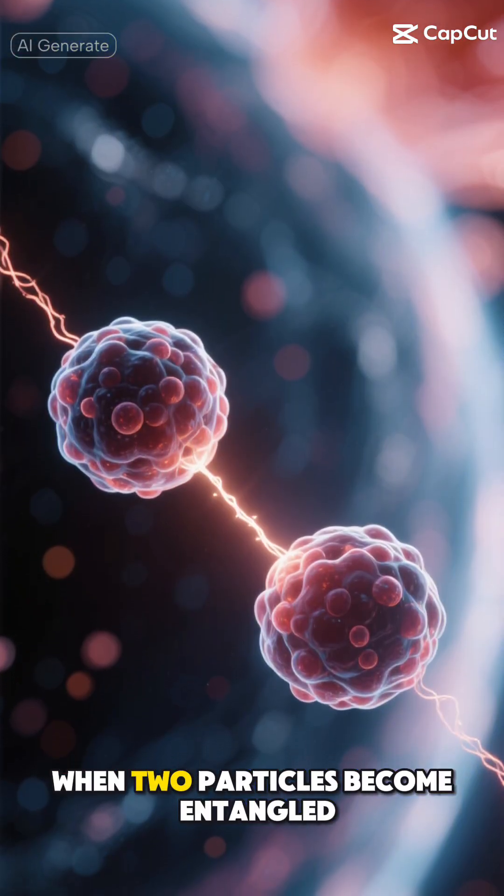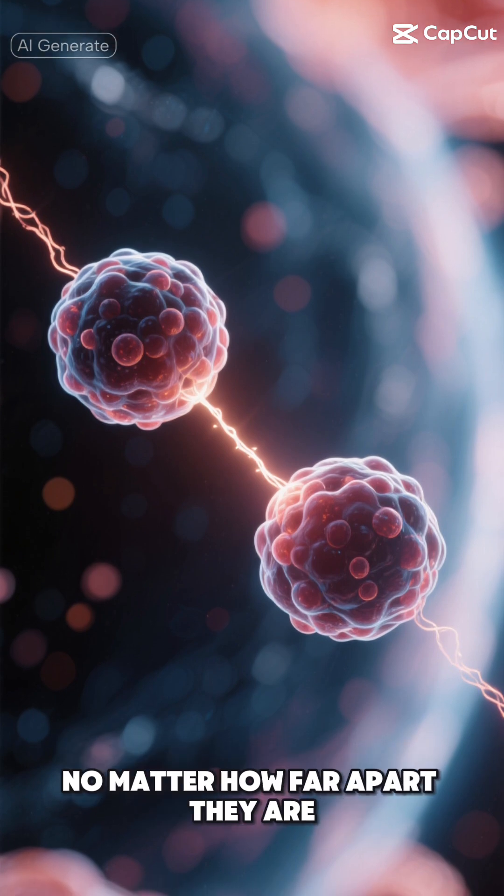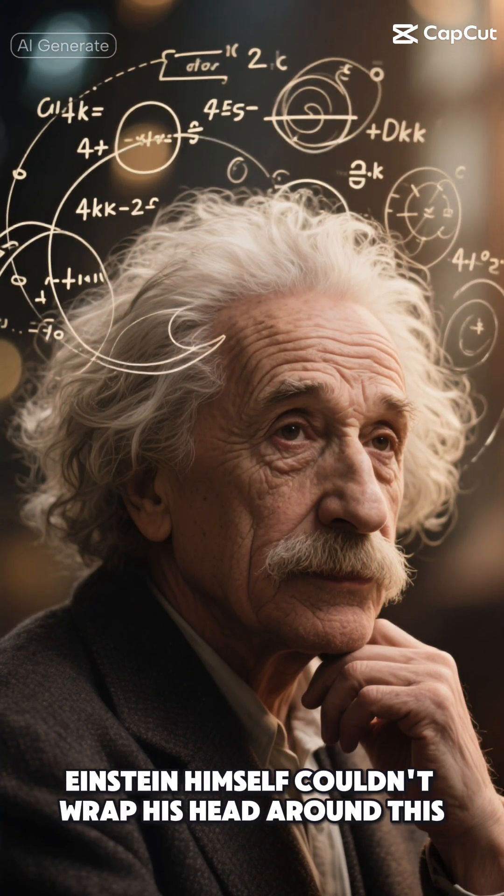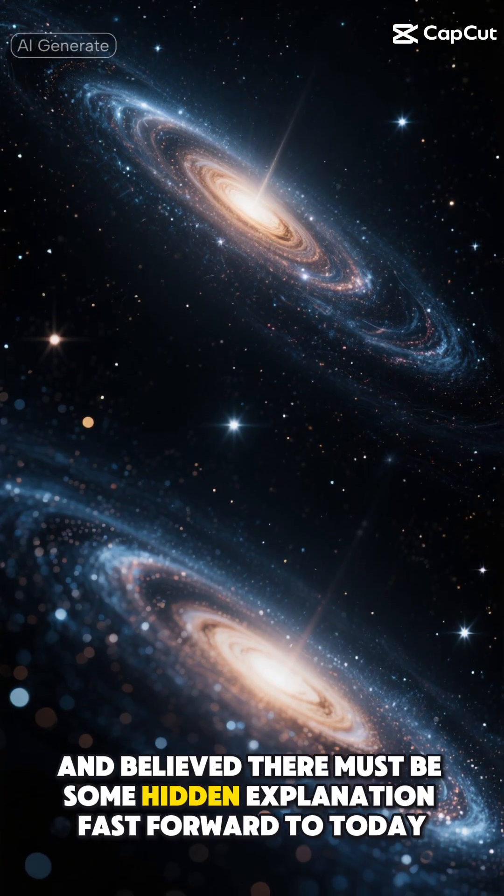When two particles become entangled, they start behaving like they're connected by an invisible thread, no matter how far apart they are. Einstein himself couldn't wrap his head around this. He called it spooky action at a distance and believed there must be some hidden explanation.